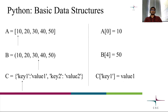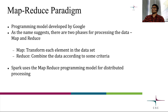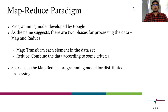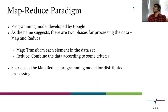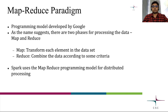Spark offers a whole new world when it comes to programming. We already talked about the MapReduce paradigm. It's a programming model developed by Google. As the name suggests, there are two phases for processing data: Map and Reduce. Map says you should transform each element in the dataset, and Reduce says you should combine the data according to some criteria. Spark uses the MapReduce programming model for distributed processing. Those who have used functional programming languages would be familiar with these concepts.